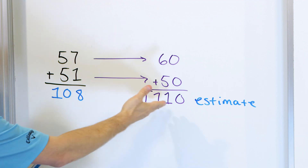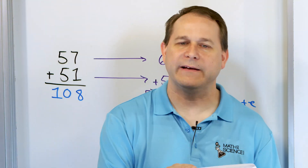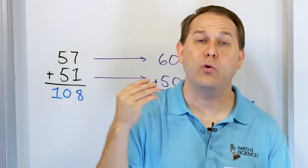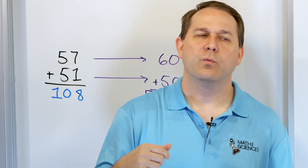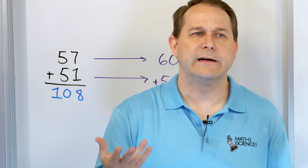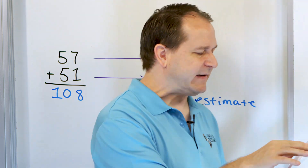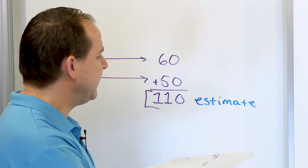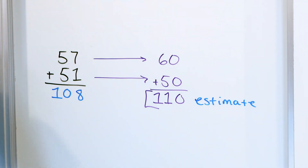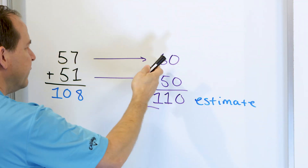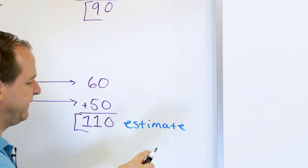Estimating is so that we can get a quick answer very fast and have it pretty close, but not exact. That's what an estimate is. So for the rest of the problems, we're not going to add the real numbers up. We'll just round the numbers and then estimate.